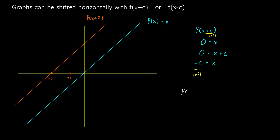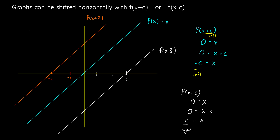What if we have something like f of x minus c? We can do the same thing. If zero equals x, we make the analog zero equals x minus c, which means c equals x. So this indicates a right shift. If we wanted to do f of x minus 3, we'd go one, two, three units over to the right, crossing at that point. So with a leftward shift, we're adding inside our function — f of x plus 2, f of x plus 5. And if we're doing a rightward shift, we're subtracting — like f of x minus 3 or f of x minus c.